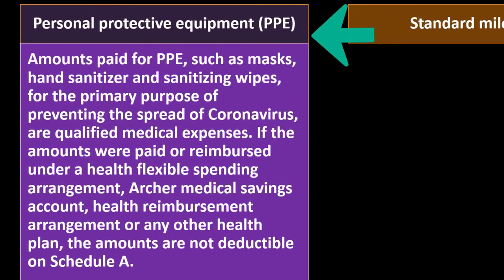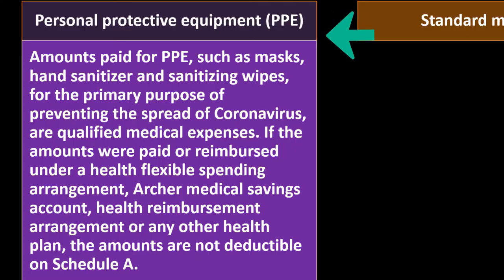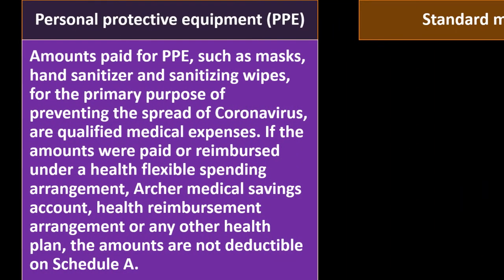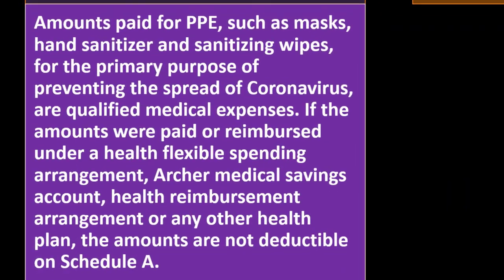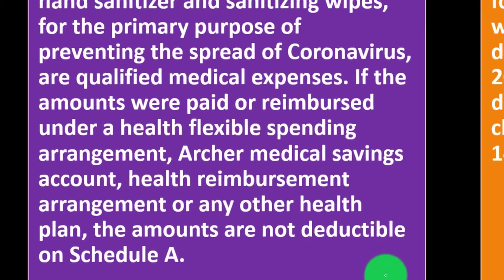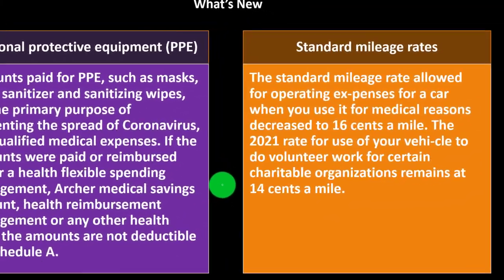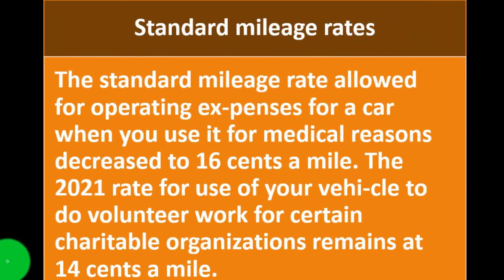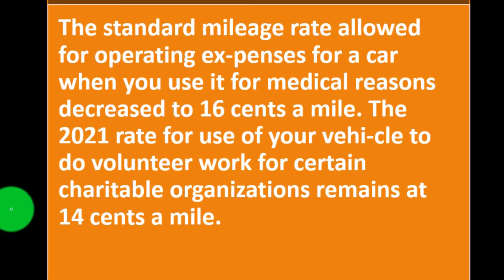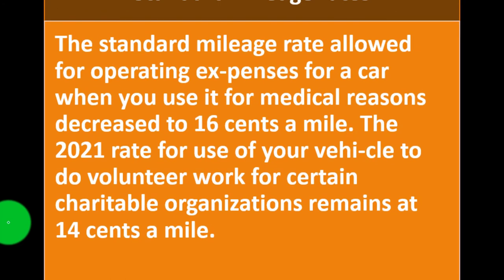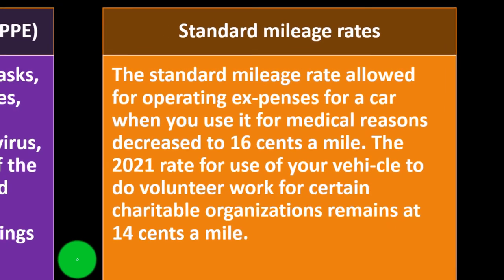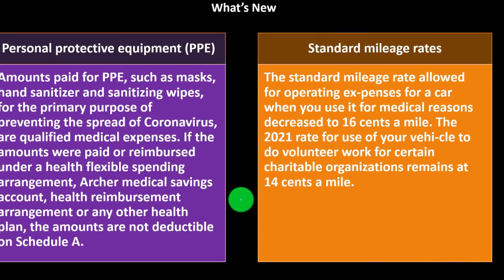What's new: Personal Protective Equipment (PPE) — amounts paid for masks, hand sanitizer, and sanitizing wipes for the primary purpose of preventing the spread of coronavirus are qualified medical expenses. However, if those amounts were paid or reimbursed under a health flexible spending arrangement, Archer Medical Savings Account, health reimbursement arrangement, or any other health plan, the amounts are not deductible on Schedule A. Also, the standard mileage rate for medical reasons decreased to 16 cents per mile, while the rate for use of your vehicle for volunteer work for certain charitable organizations remains at 14 cents per mile.